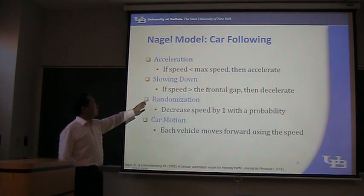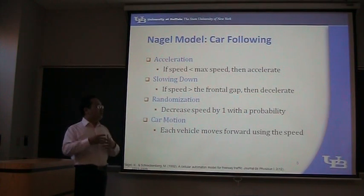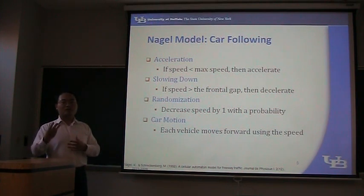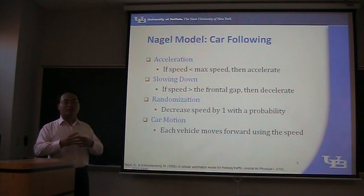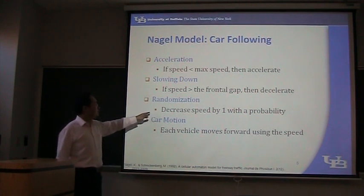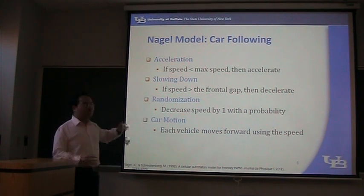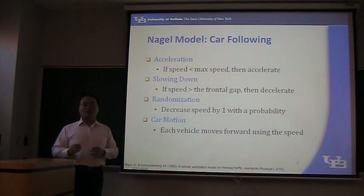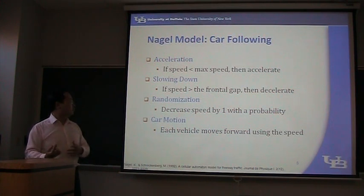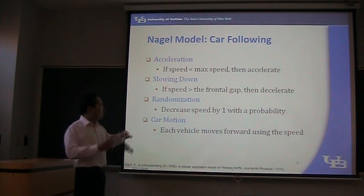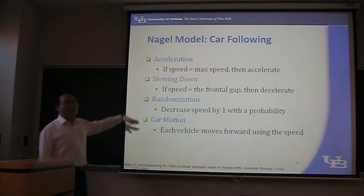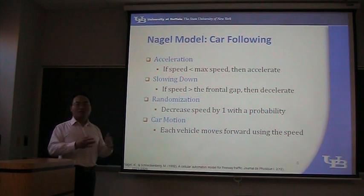The second logic is slowing down: if the speed is greater than the frontal gap, then it will decelerate. So if the speed is four but the frontal gap is three cells, then the vehicle will decelerate according to the frontal gap, so there will be no collision. The third is randomization: in this process, the speed will be decreased by one with a probability — for example with a 30% chance the vehicle's speed will decrease by one cell per hour. Then comes motion: each vehicle will move forward using the speed. These four rules comprise the whole car-following model in cellular automata.